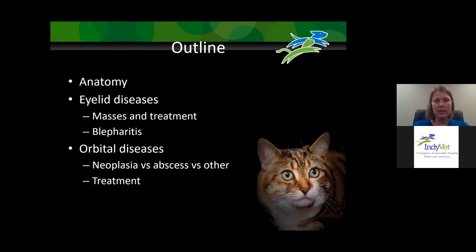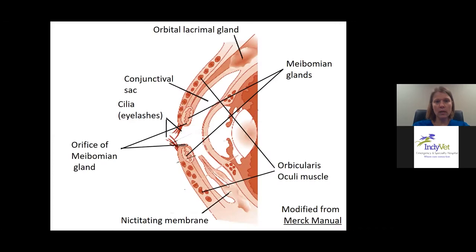As an outline, we're going to first go over some anatomy, mostly of the eyelid, and then talk about some eyelid diseases — especially eyelid masses, their treatment — and we'll talk a little bit about blepharitis. Then we're going to move on to orbital diseases, focusing on neoplastic diseases, orbital cellulitis and abscesses, and then touch on a few other orbital diseases and their treatment.